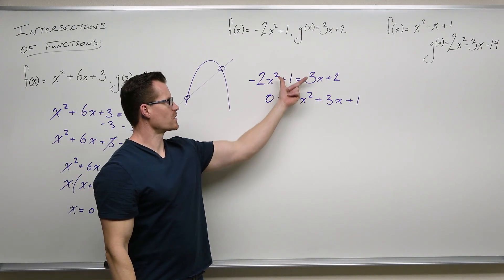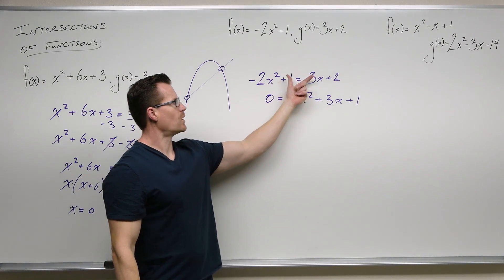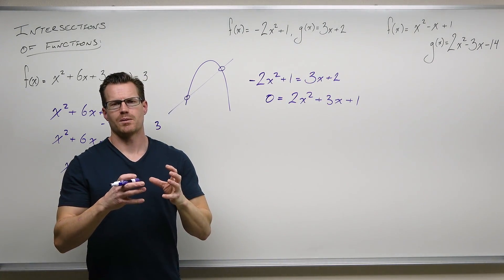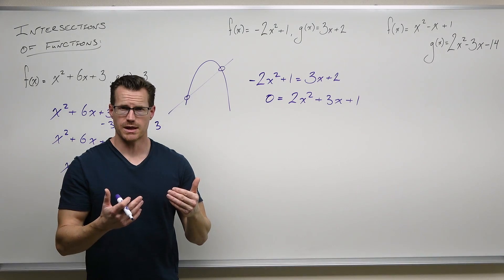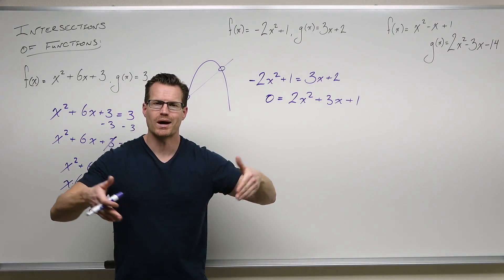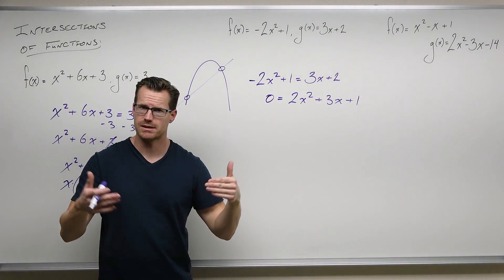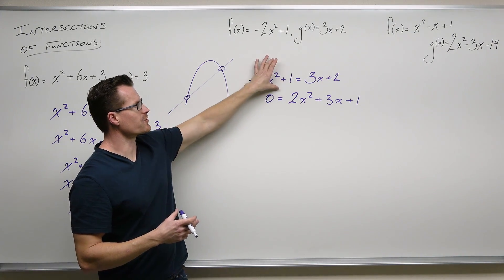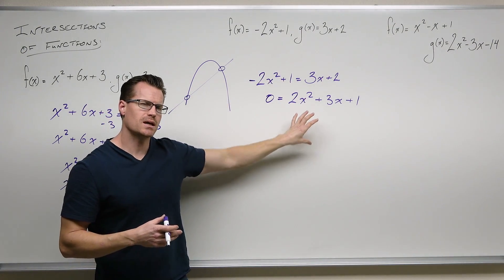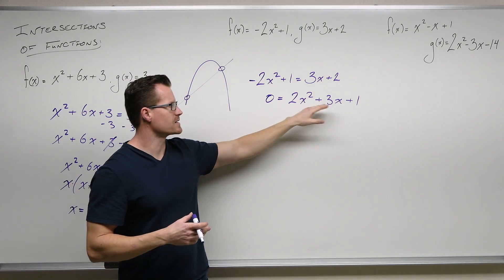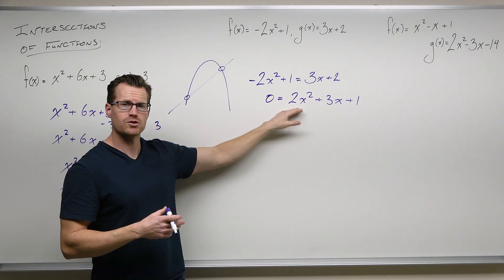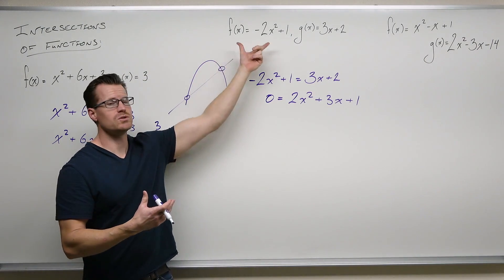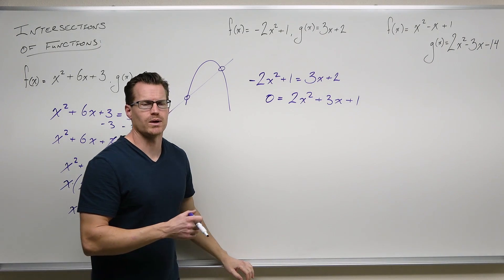Adding 2x-squared, we get 2x-squared. Subtracting one, we get 1. Now we have this set up to look like a different parabola — an upward opening parabola set equal to zero, finding x-intercepts. But because we set this equal stemming from that original idea, the x's we get here — even though they represent x-intercepts for this function — will represent intersection values of x for these two functions. So we solve it the same exact way.